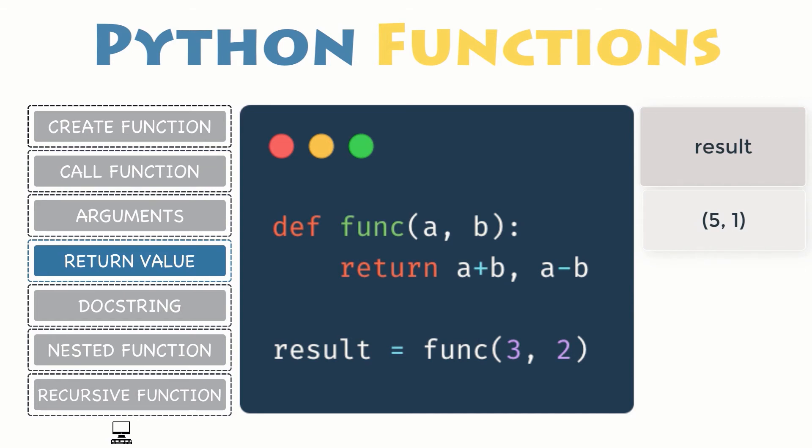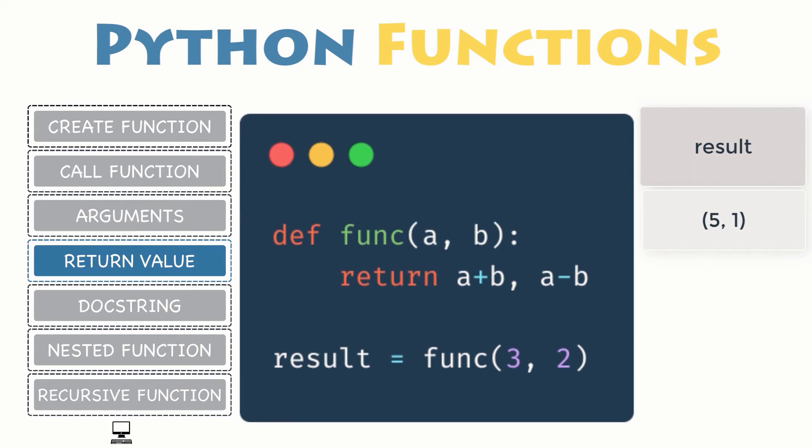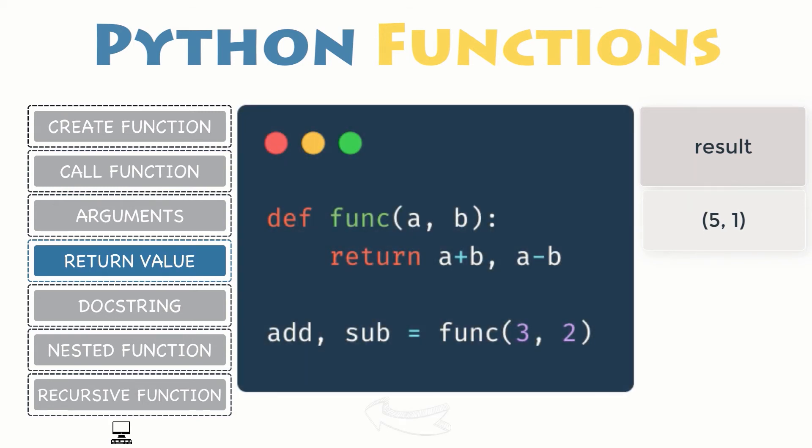When you return multiple values, Python actually packs them into a single tuple and returns it. Consequently, you can then use multiple assignment to unpack the parts of the return tuple into multiple variables.